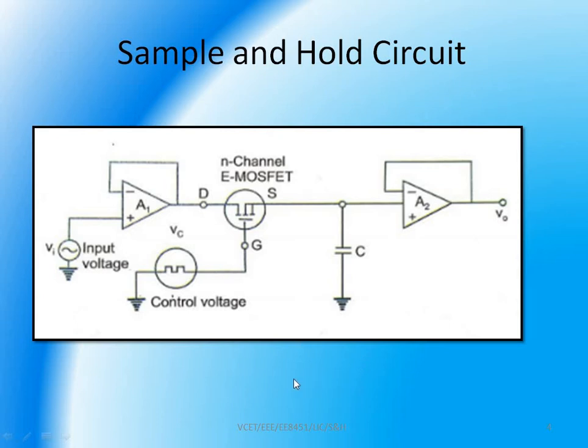We will get into the operation of sample and hold circuit. Assume that the control input voltage is positive. This positive voltage will turn on this enhancement type MOSFET and this will make the capacitor charge to the instantaneous value of the applied input VI with a time constant of RC. And here the input voltage appears across the capacitor and then the output circuit will be getting its output as the A2's output voltage. A2 acts as a voltage following element.